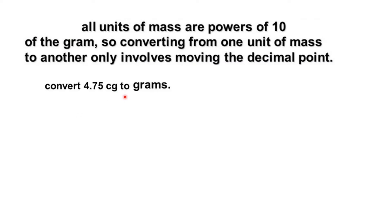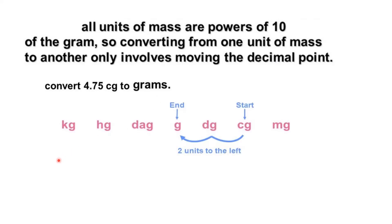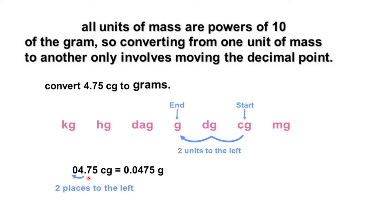Example: convert 4.75 centigrams into grams. Centigram is the smaller unit and gram is the bigger unit. Write the mnemonic for weight: kg, hg, dag, gram, dg, cg, mg. Place 4.75 starting at the cg position — writing 5, 7, 4 from right to left. The starting point is cg and the ending point is gram, which is 2 jumps to the left. So move the decimal point 2 units to the left: the answer is 0.0475 grams.